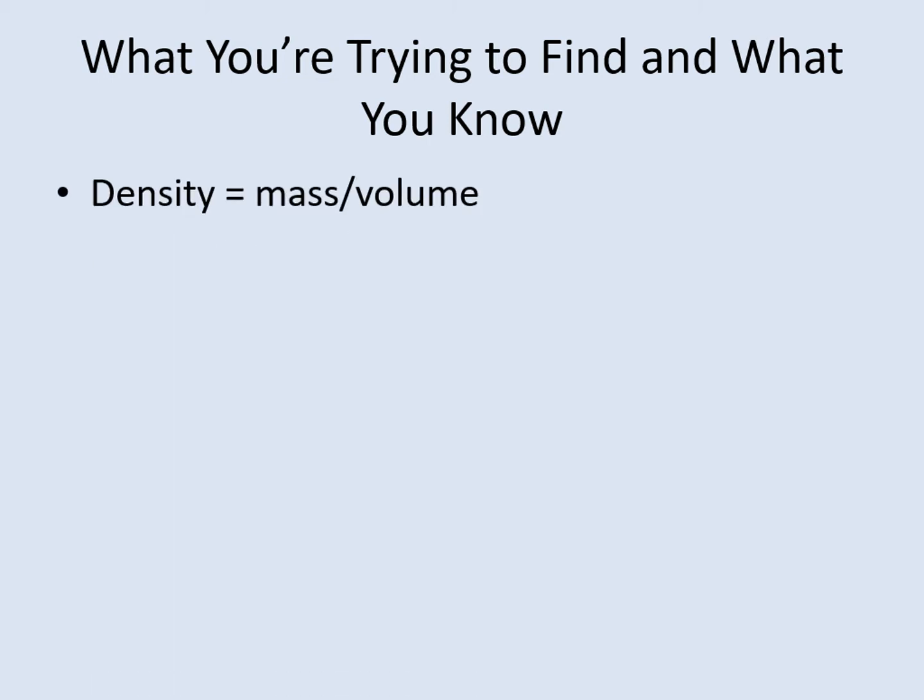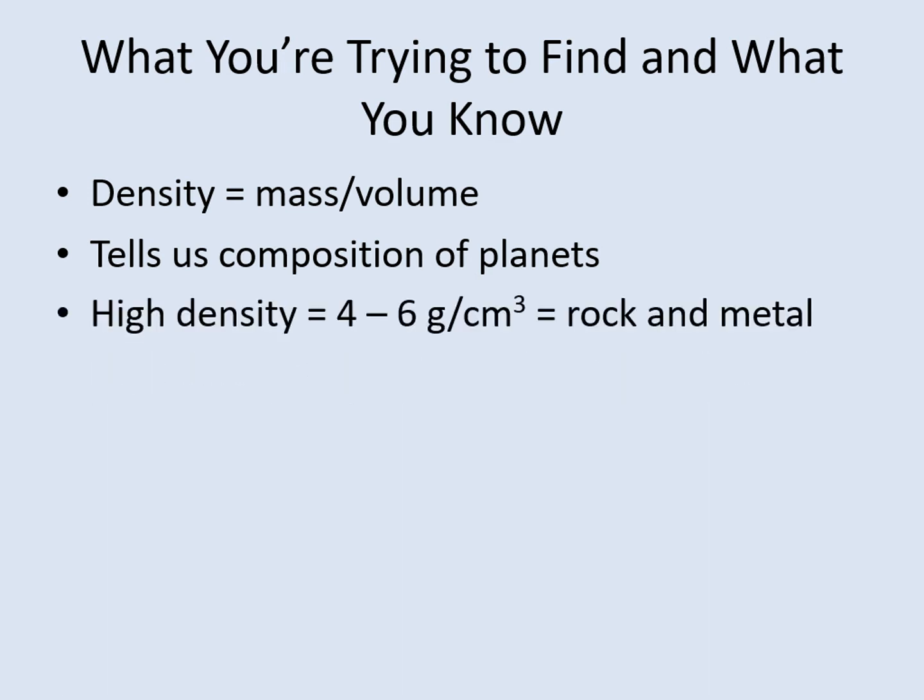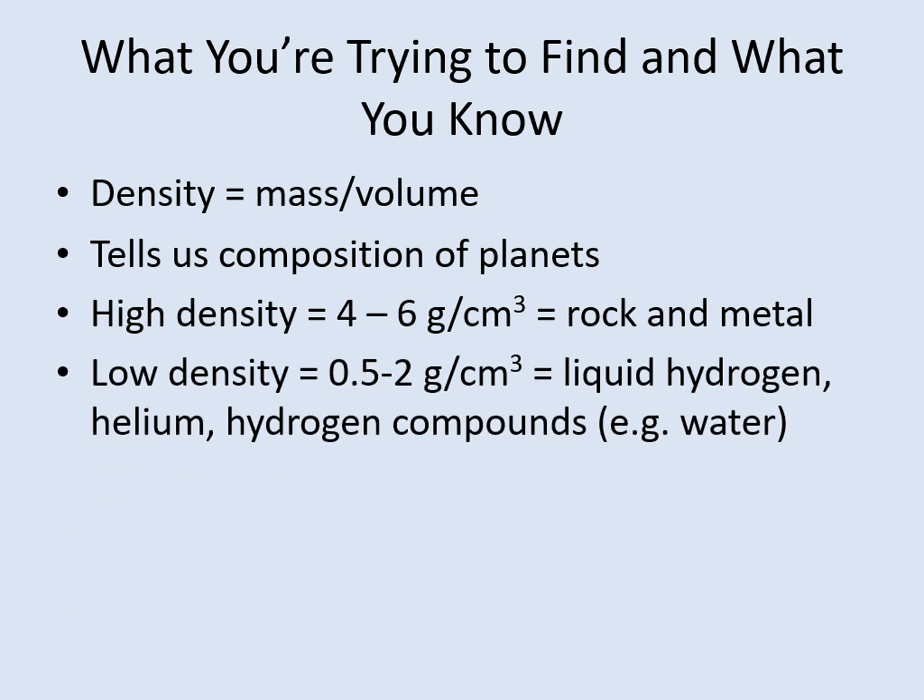Density is defined as the mass divided by the volume. More generally, the density of a planet depends mostly on what it's made of. A high-density planet will typically be made of materials like rock and metal, while a lower density usually means the composition is mostly liquid hydrogen and helium or hydrogen compounds like water and methane.